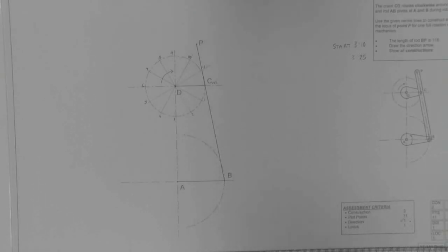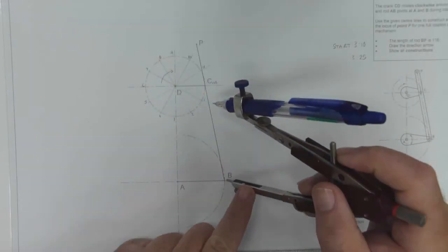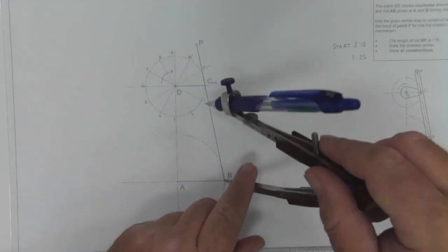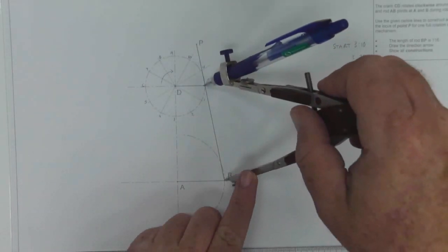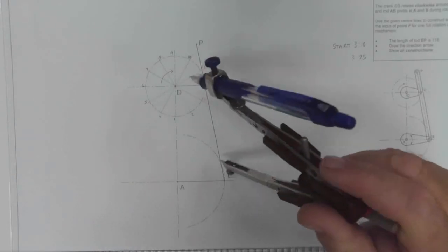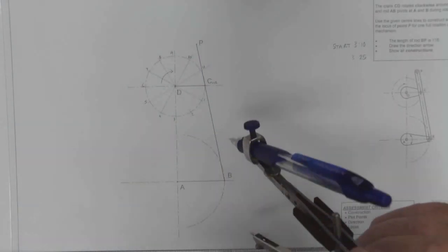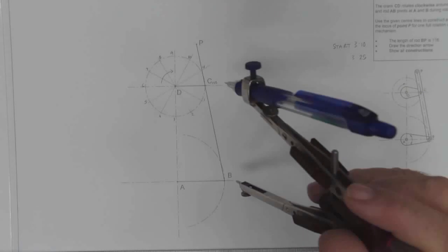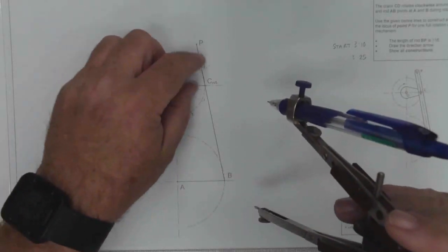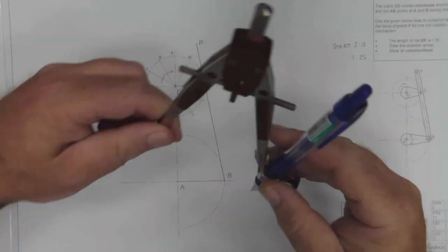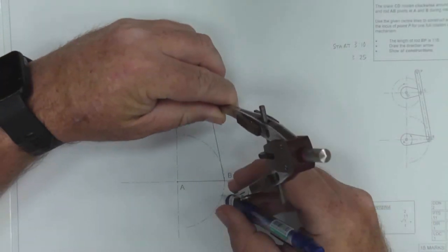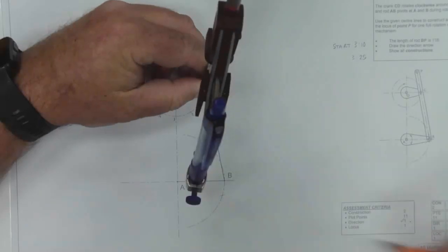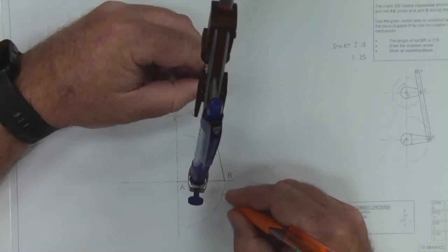What I want to do is take my compass and set my compass to my distance of BC. Because these are the two aspects that remain the same. So that distance of BC will stay the same and I need to work it out as it rotates along this semi-circle and each point changes. So my first point here is point 1.